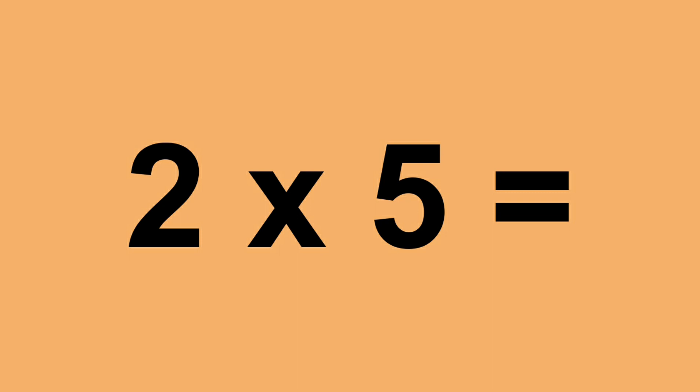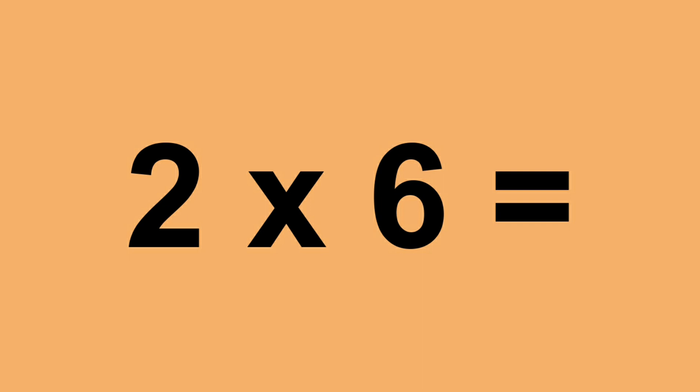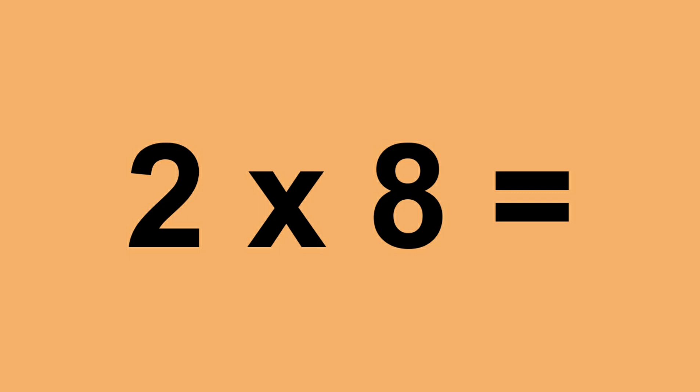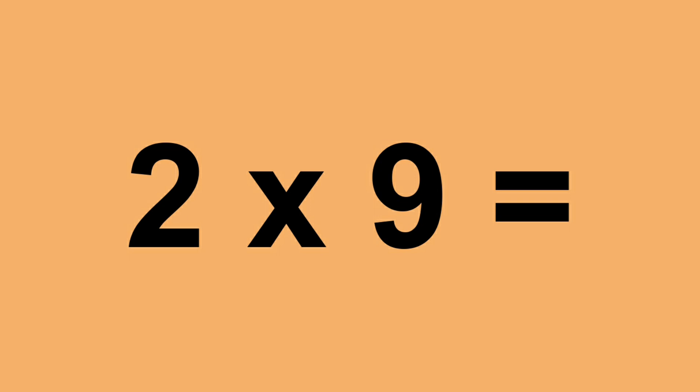Two times five equals ten. Two times six equals twelve. Two times seven equals fourteen. Two times eight equals sixteen. Two times nine equals eighteen.